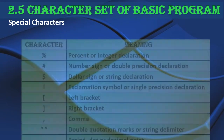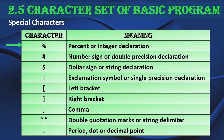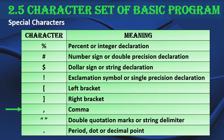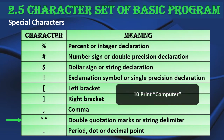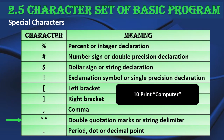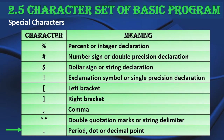There are more special characters. The percent sign is used for integer declaration. The number sign is for double precision declaration. The dollar sign is for string declaration. The exclamation symbol is for single precision declaration. These four characters will be discussed later as type declaration characters. Left and right brackets are also included. We can also use comma and double quotation marks, which are known as the string delimiter — for example, when writing PRINT computer, the string must be in double quotes. Finally, the period or decimal point can also be used in programs.